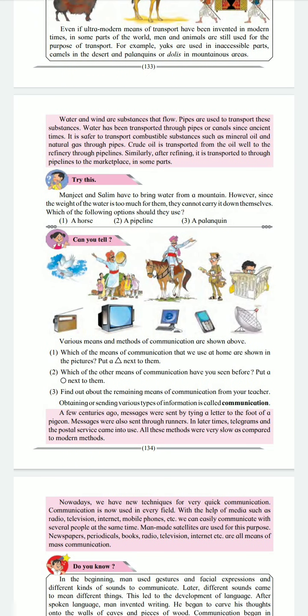Try this. Manjeet and Salim have to bring water from a mountain. However, since the weight of the water is too much for them, they cannot carry it down themselves. Which of the following options should they use? A horse? A pipeline? A palanquin?